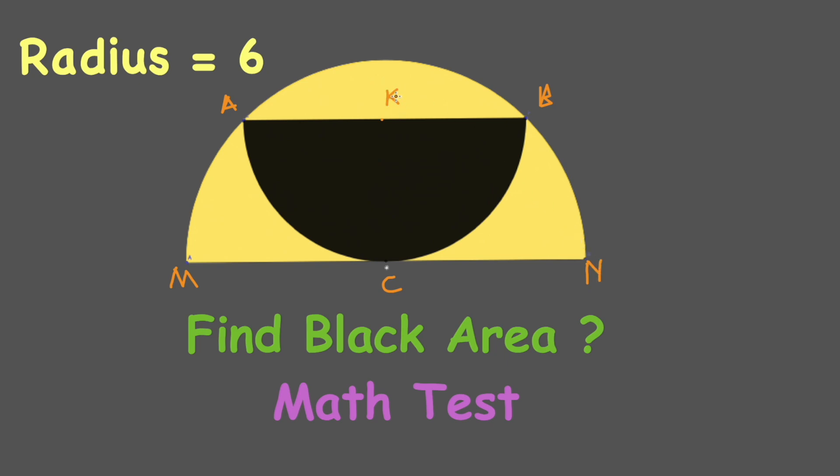is K. CK is the radius of the black semicircle. CK equals AK equals BK. Why? Because we have a right triangle with angles ACB and CBA equal to 45 degrees.